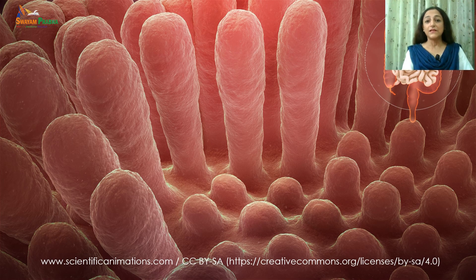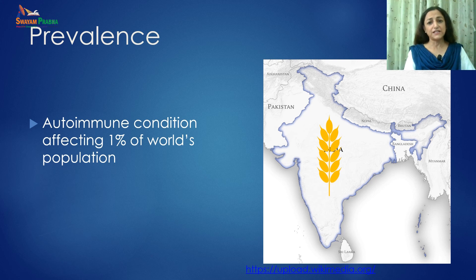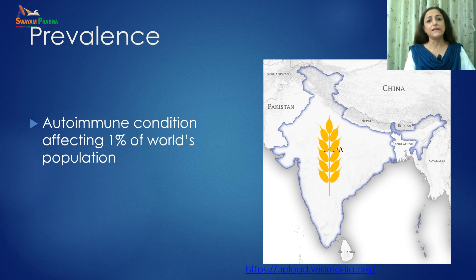In Celiac Disease, the damage and inflammation to the lining of the gut flattens the villi, thereby reducing its ability to help with the digestion process. As a result, our intestines are not able to digest nutrients from our food, which will cause the symptoms of Celiac Disease. It is a debilitating autoimmune condition affecting an estimated 1% of the world's population. In our country, the prevalence of active and latent Celiac Disease is higher in northern India and other areas where wheat-eating population is present.